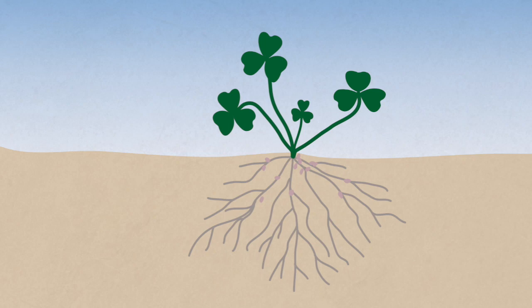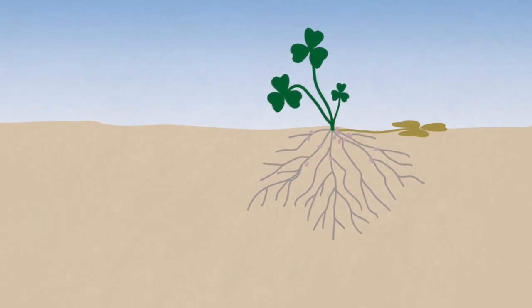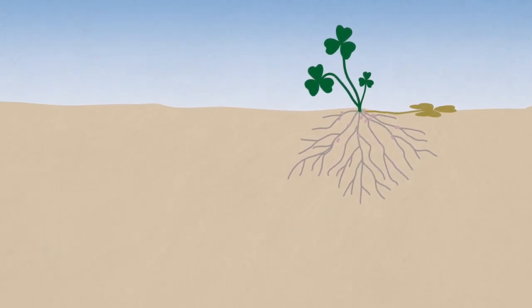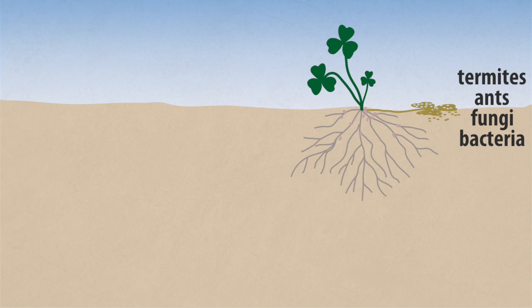Soil organic matter cycles continuously between its living, actively decomposing and more stable fractions. When plants and animals die, they are decomposed to become part of the soil organic matter. Soil organisms fragment and consume organic residues, gaining energy to grow and reproduce.